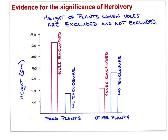Here is similar evidence demonstrating the strong impact of herbivory on plants. Looking at plant height, for plants preferred by voles, the height is significantly greater when voles are excluded than when they are present. Interestingly, when voles are present, other plants fare better because voles are feeding on the preferred plants, giving plants not preferred by voles an advantage.